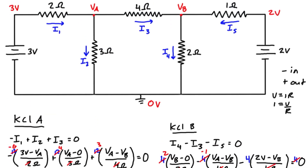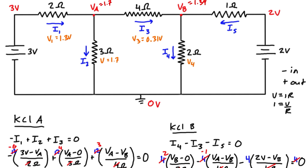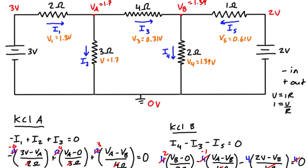Labeling the results on the original diagram: Va = 1.7 V and Vb = 1.39 V. We can now find the voltage drop across every resistor: V1 = 3 − 1.7 = 1.3 V; V2 = 1.7 − 0 = 1.7 V; V3 = 1.7 − 1.39 = 0.31 V; V4 = 1.39 − 0 = 1.39 V; and V5 = 2 − 1.39 = 0.61 V.